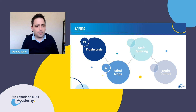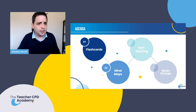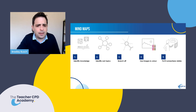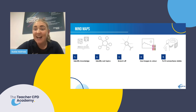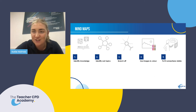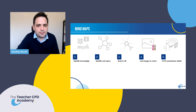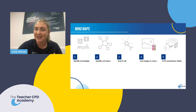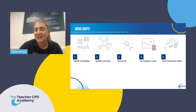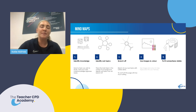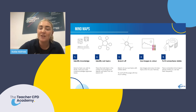Moving to strategy two: mind maps. The key is keeping them basic. Students often think they need to cover a sheet of paper with as much information as possible, but like flashcards, it needs to be clear and concise. If it's being used as a revision resource, students need to be able to process and read that information quickly and clearly, rather than deciphering through lots of text to find the knowledge they're looking for. Don't fill it with too much writing — keep subtopics clear and concise.